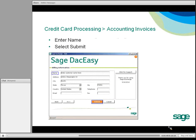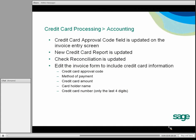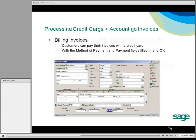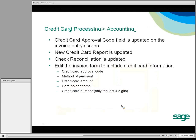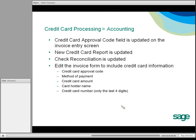At that point, the invoice is saved. If you recall the invoice back to the screen, there will be an approval code automatically placed here. You can also view information regarding the credit card transaction on a new credit card report, and the check reconciliation is updated. You can also edit your invoice to include items such as the credit card approval code, method of payment, credit card amount, cardholder name, and the masked credit card number showing the last four digits. Those are optional and need to be added under Edit Defaults Form Setup.